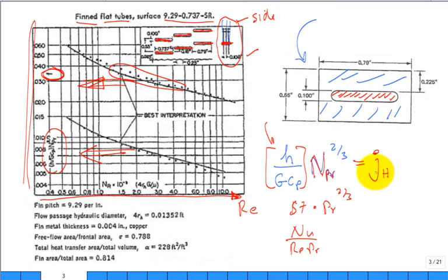There's a lot of new vocabulary: Stanton number, G (mass velocity), and the Colburn factor. This friction factor F and the Colburn J factor both apply to the outside — the air side flowing between the fins. The inside of the tubes is straightforward; the outside with kinked fins is the hard side. The fanning friction factor helps calculate pressure drop on the air side, while the Colburn factor gives the convection coefficient on the outside.